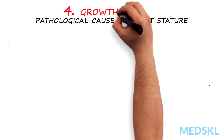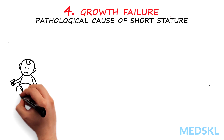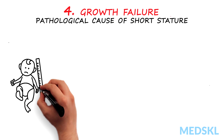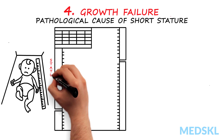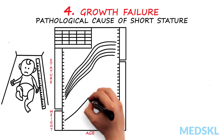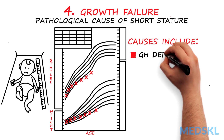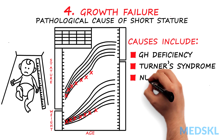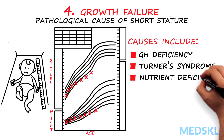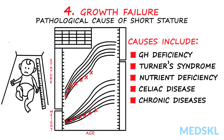The fourth pattern shows growth failure, or postnatal onset of pathologic short stature. This child's short stature is pathologic due to the crossing of percentile curves. Causes of growth failure include growth hormone deficiency, Turner syndrome, nutrient deficiency, celiac disease, or the effects of chronic diseases such as cystic fibrosis.